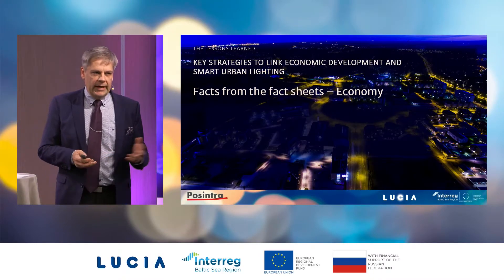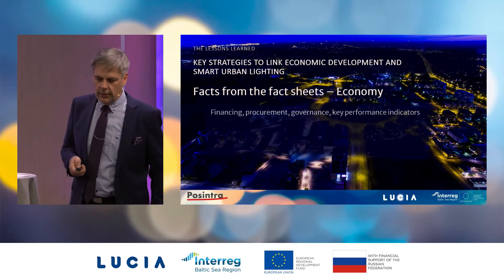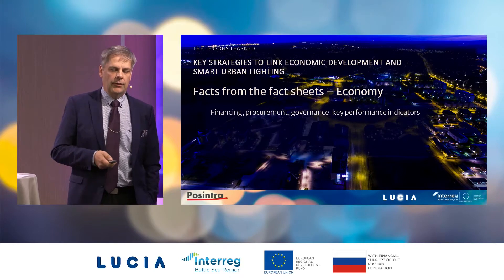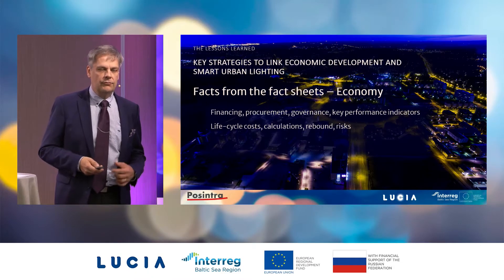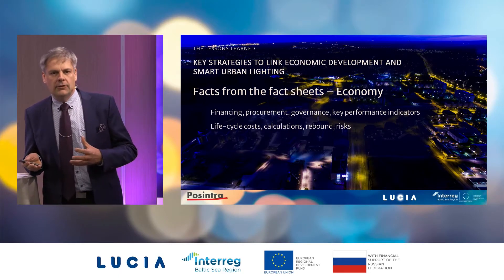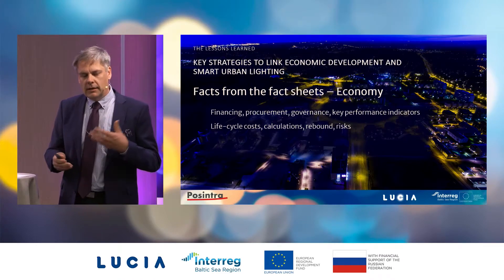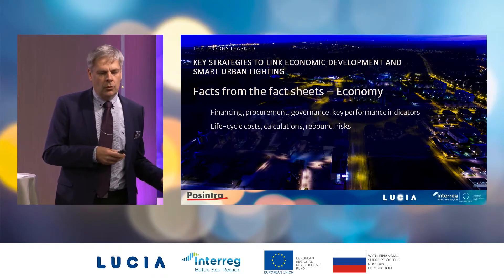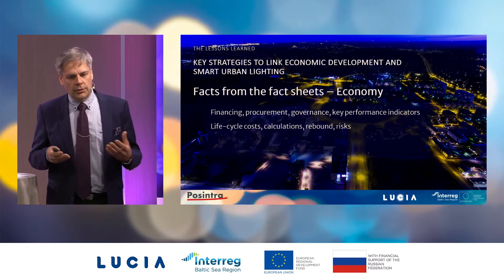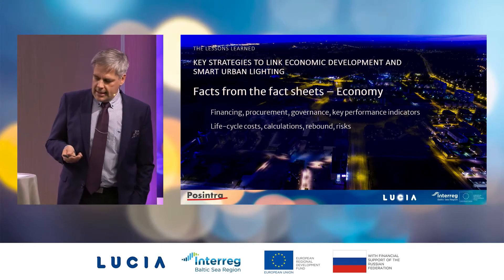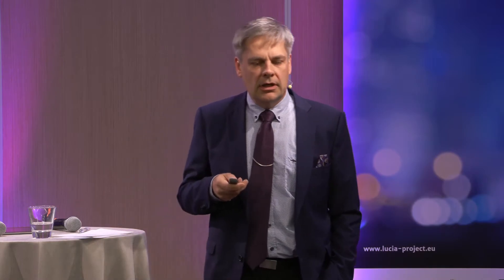The three other fact sheets cover financing, procurement, governance, key performance indicators, life cycle cost calculations, rebound effect, and risk management. For the calculations, we developed a small Excel tool to help you evaluate what you are going to do and give some figures on how it should look. It also helps you evaluate after you have done it. This is mainly for helping people inside the city organization to justify what they are really doing when taking steps to move forward with city lighting.